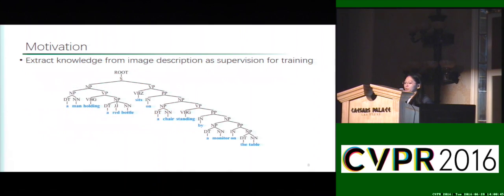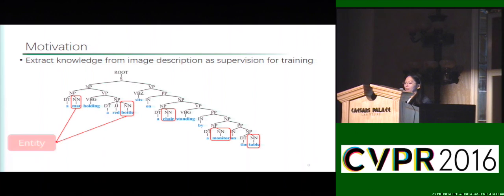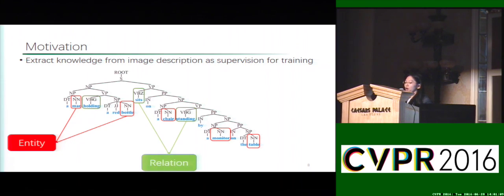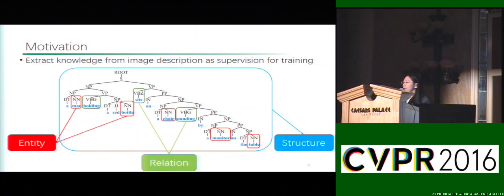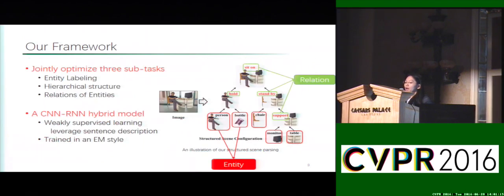More specifically, we propose to extract knowledge from sentence-based image descriptions as supervision, and no extra pixel-wise annotation is required. Sentences described include rich information such as nouns indicating entities, verbs indicating relations, and the organization of phrases can help discover structured semantics. Given a scene image, our model can jointly address three tasks: entity labeling, hierarchical scene structure generation, and inter-object relation prediction.